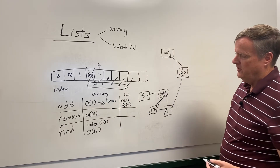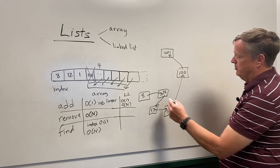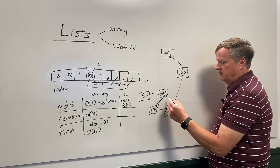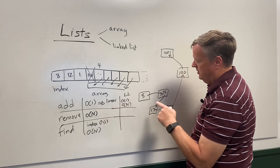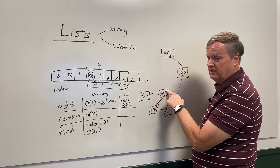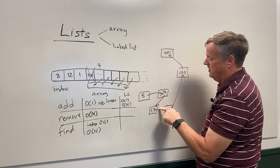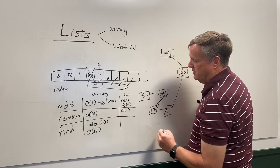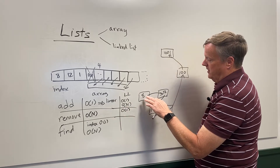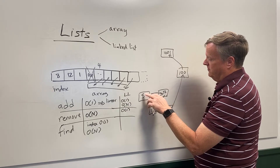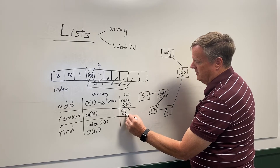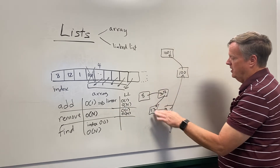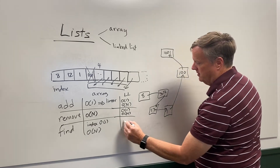Removing from a linked list is similar — you fix up the pointers to remove the element. If you already have a pointer to the location, it's constant time. If you don't know where it is and have to scan for it, it becomes a linear operation. Finding an arbitrary element in a linked list is always O(n).